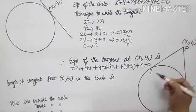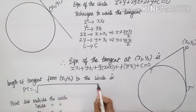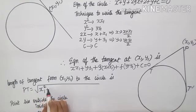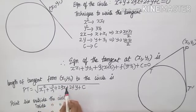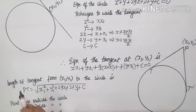To measure the length of the tangent, we have the formula: PT equals root of the circle equation, where wherever x is coming, put x1. So the circle equation is x square plus y square plus 2gx plus 2fy plus c. Wherever x and y are coming, put x1, y1, and do not put equal to 0. So this is the length of tangent from a point x1, y1 to the circle.